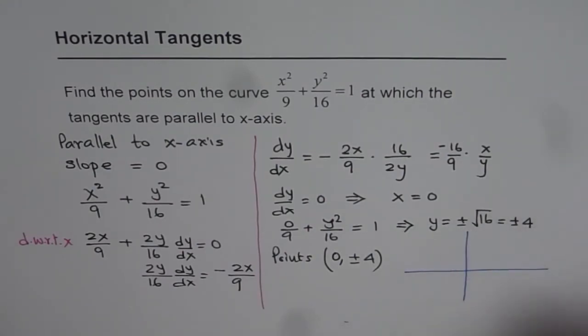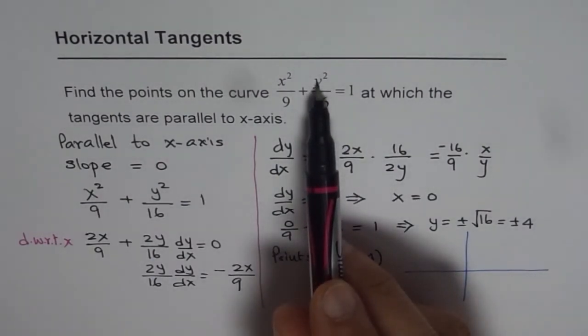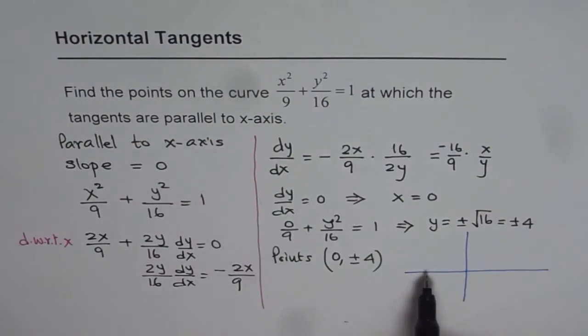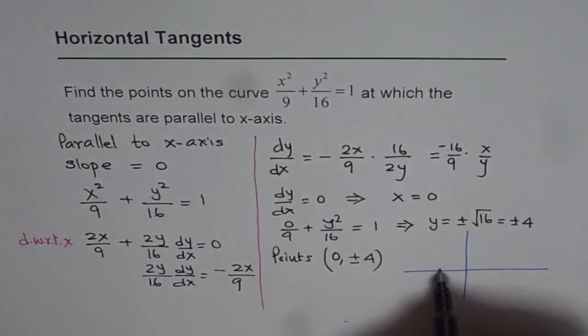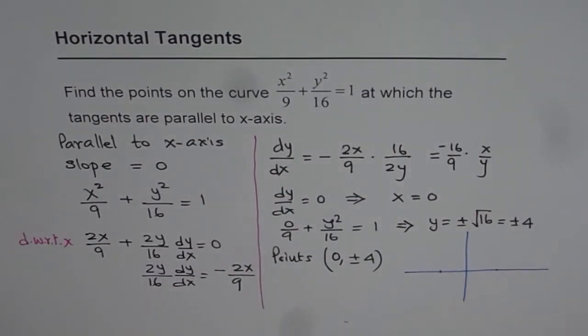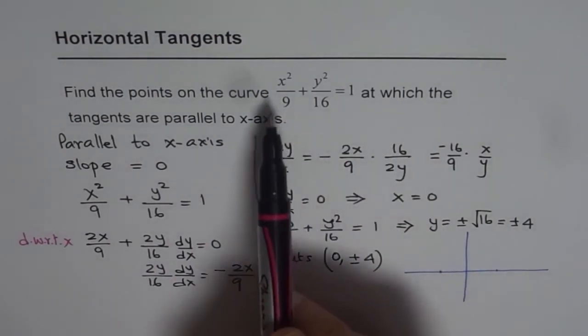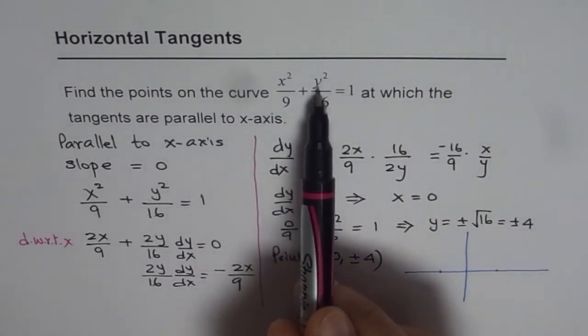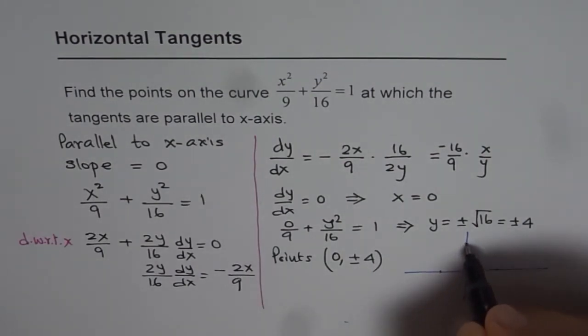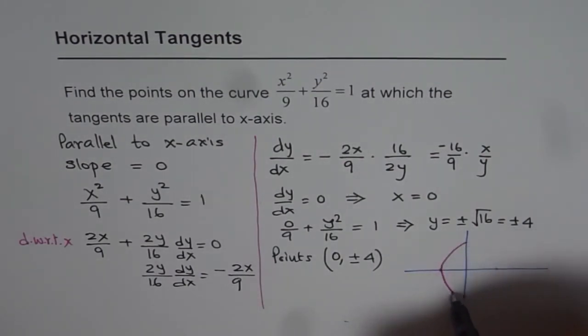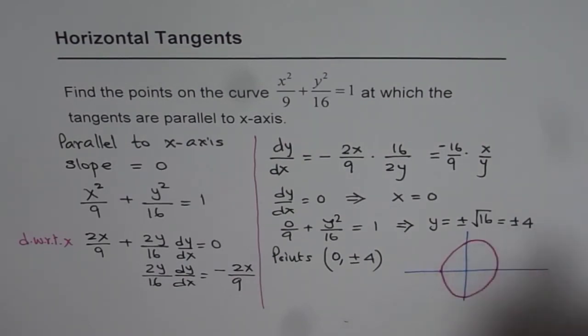Now in this ellipse, if I put y = 0, I get the x-intercepts. Then x will be √9 which is ±3. Let's say this is ±3. And if I put x = 0, I get the y-intercepts which will be at ±4. Let's say these are ±4. So we get kind of an ellipse which is like this. Okay, not so good but still.